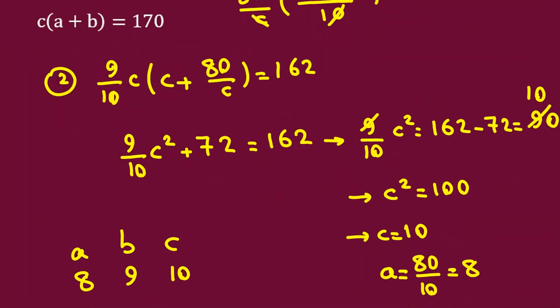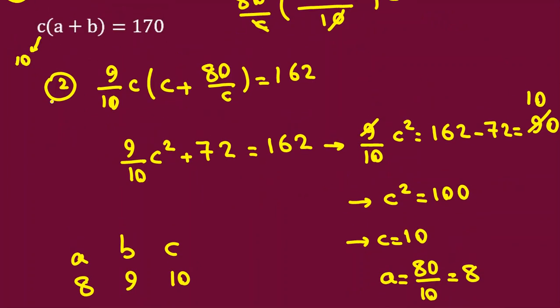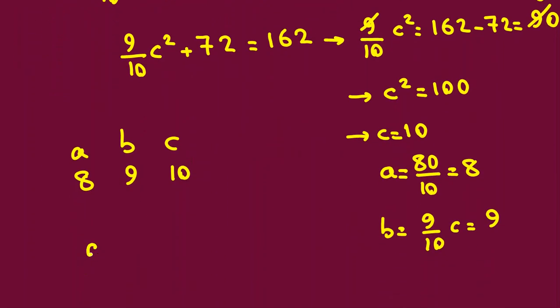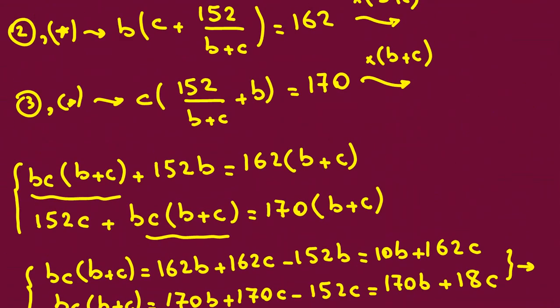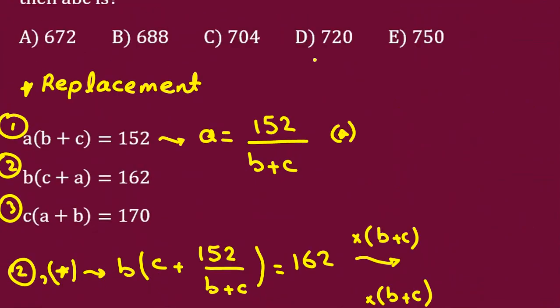Now let's check also the last equation to make sure that have we reached the correct answer. C is 10 we said. A is 8, b is 9. 8 plus 9, 17 times 10, 170. So it is correct. The problem says find ABC, the product. 8 times 9, 72. Times 10, 720. So the answer is D.